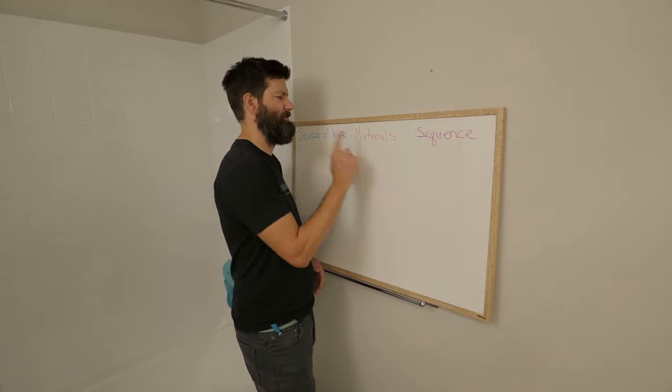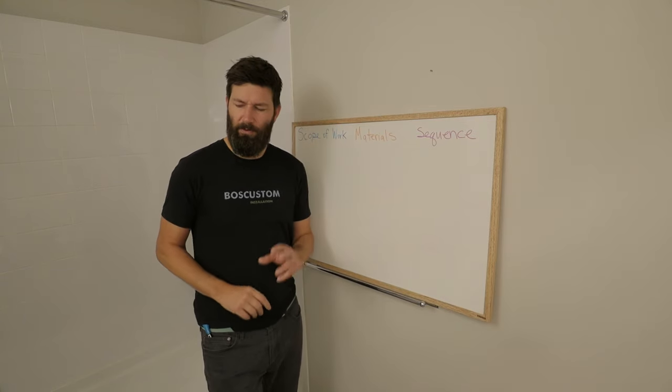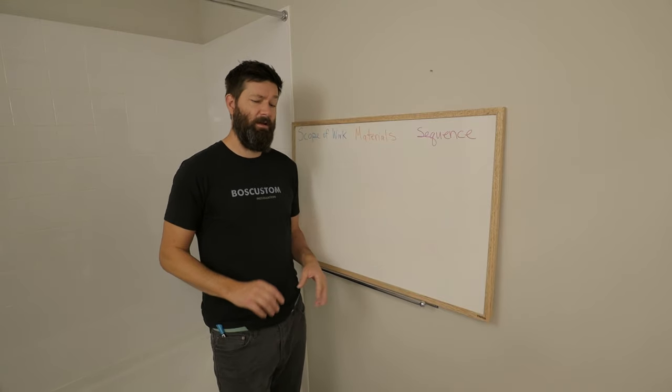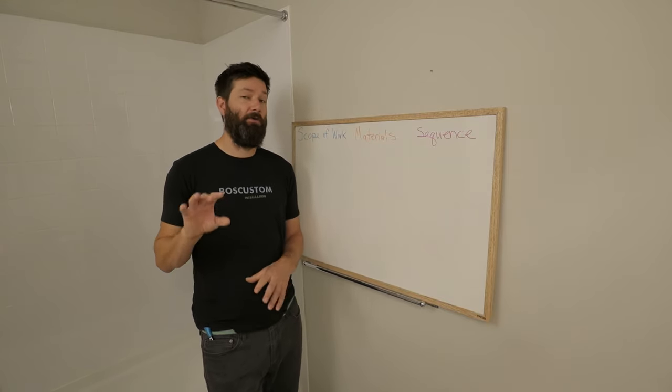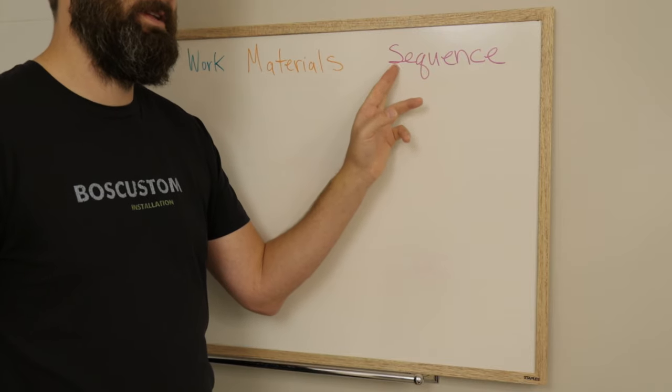Next thing we're going to cover is the materials. This is one of the most difficult parts. So we'll run through my material choices, how to save a bit of money, and how to pick things that are going to go together and hopefully look nice in the end. And then finally we're going to cover the sequence.